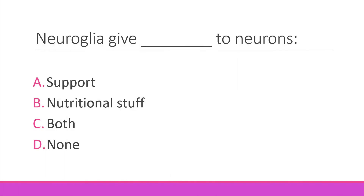Neuroglia give support to neurons. The right option is C. Neuroglia are basically the supporting sensory cells of the nervous system — there are six types in total: four types are in the CNS and two types are in the PNS.